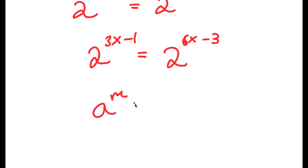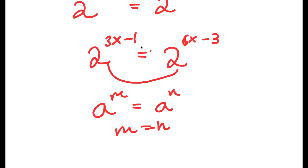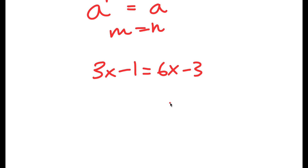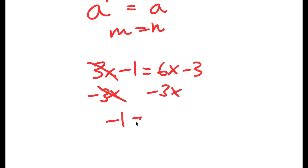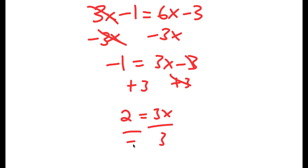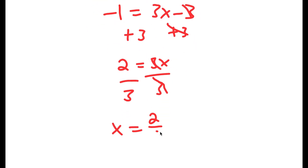If I have something in the form a to the power of m equals a to the power of n, this means m equals n. Because both bases are the same, the exponents must be equal, so 3x minus 1 equals 6x minus 3. Subtracting 3x from both sides gives negative 1 equals 3x minus 3. Adding 3 gives 2 equals 3x, meaning x equals 2 over 3.